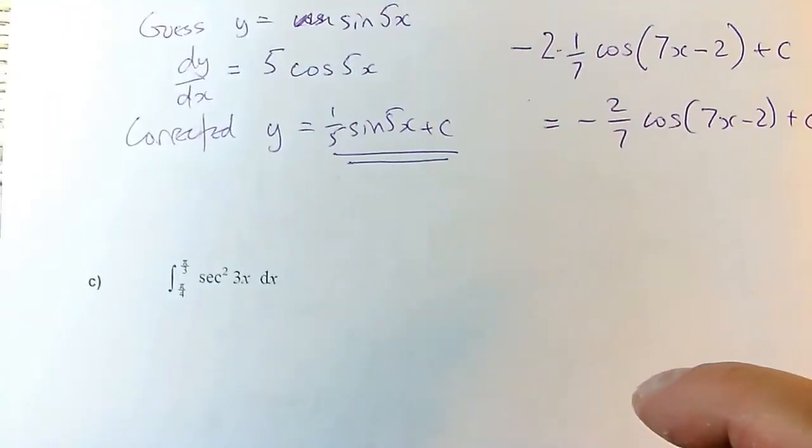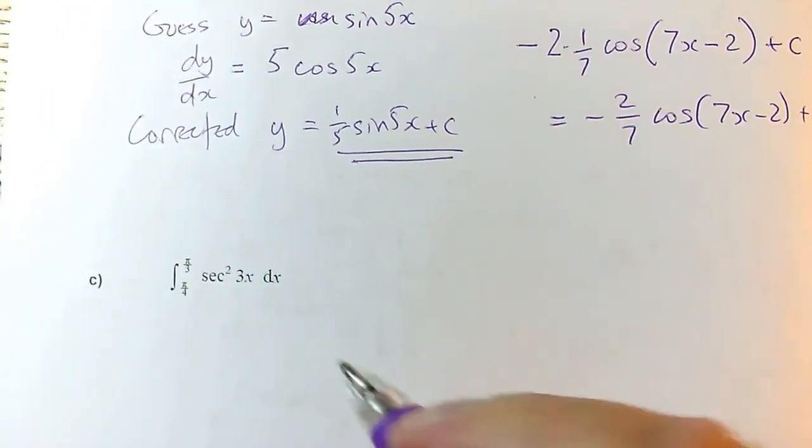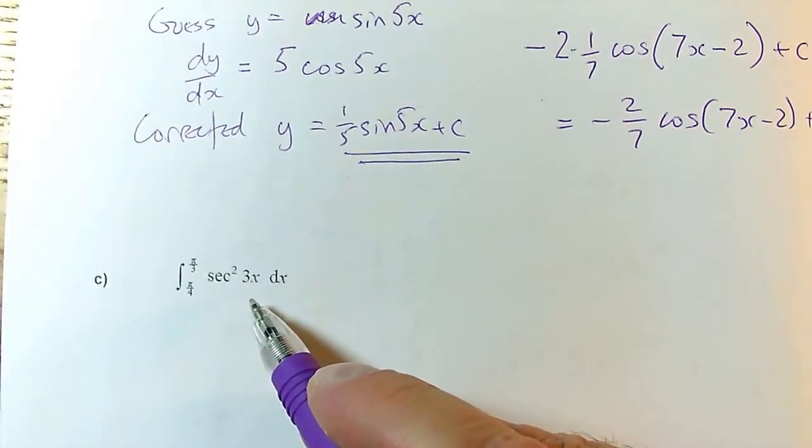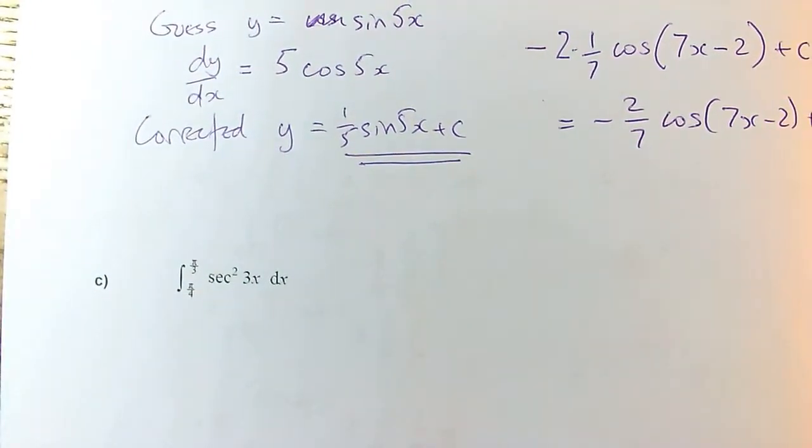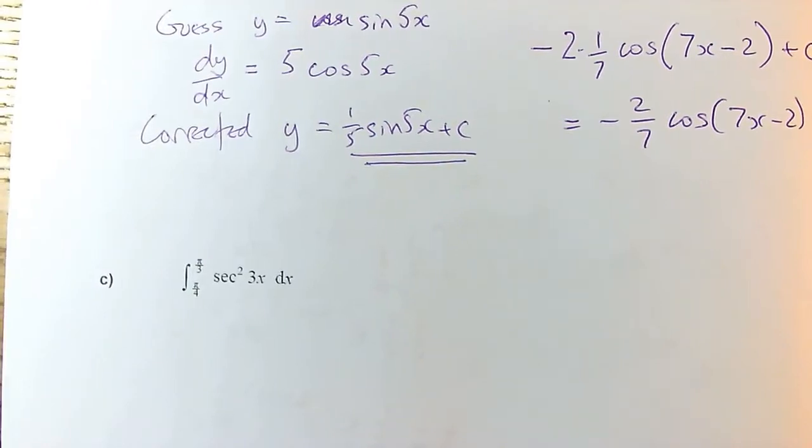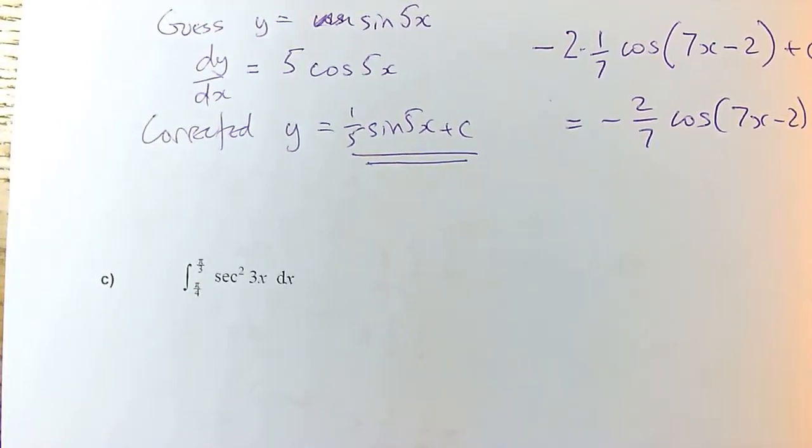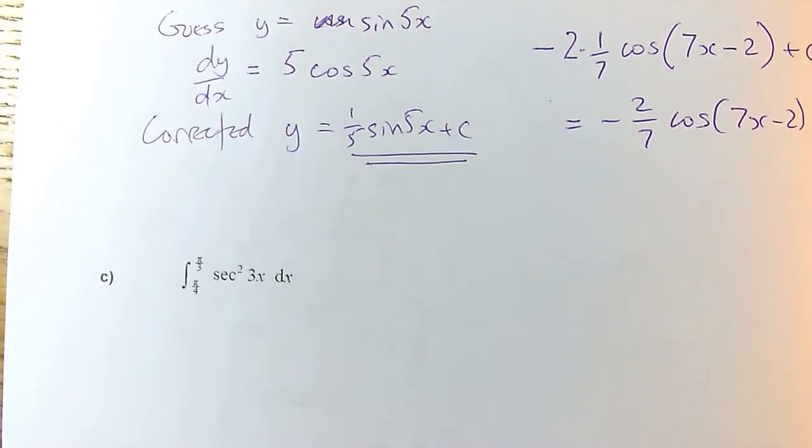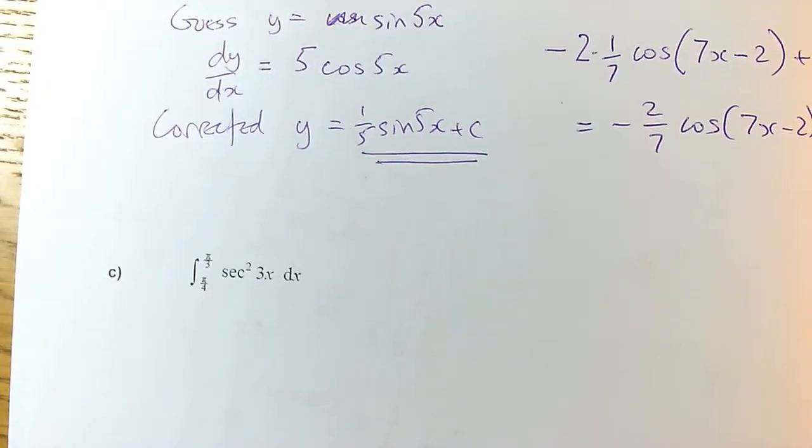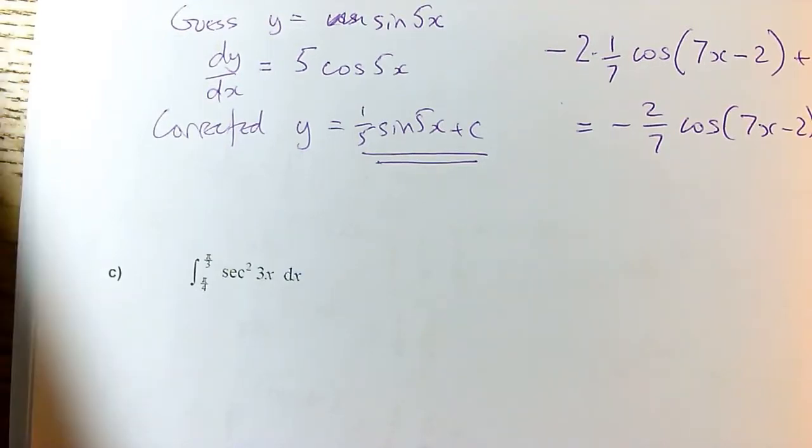And then this last one. This is sec squared of 3x. I can't use the rule for sine or cos for this. Do I know something that differentiates to sec squared of x? Well, you should do. You should remember that tan of x differentiated to that. But you should also remember that differentiating tan x was in your formula book.